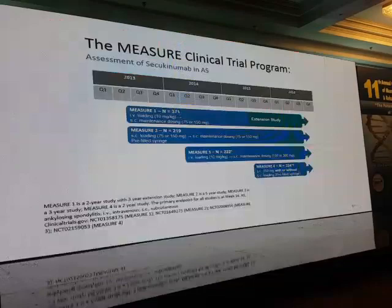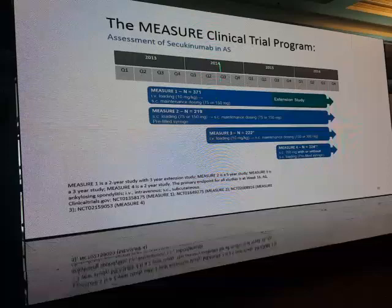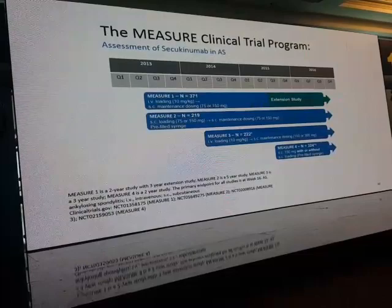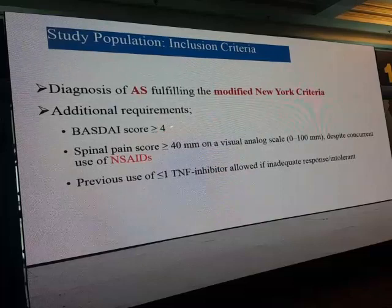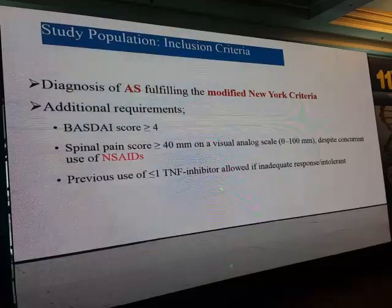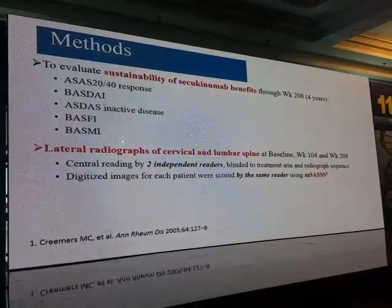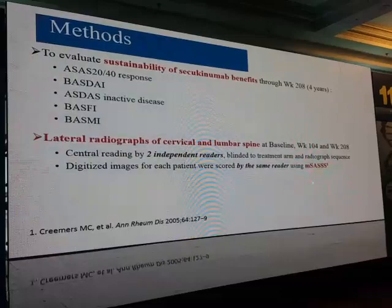To assess the role of the IL-17 inhibitor secukinumab in ankylosing spondylitis, several clinical trials were conducted under the MEASURE clinical trial program. The MEASURE 1 trial targeted patients diagnosed with AS according to modified New York criteria with a BASDAI score more than four, spinal pain score more than 40 mm on a visual analogue scale, despite previous use of NSAIDs, and regardless of prior TNF inhibitor exposure. Evaluation methods included ASAS 20/40 response, ASDAS, BASDAI, BASFI, BASMI, and — most importantly — radiological damage using the mSASSS score at baseline, two years, and four years.